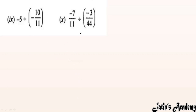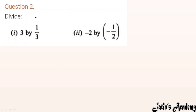Now this last part you will solve by yourself — write whatever answer you get in the comment box. For part (i) of Question 2: 3 ÷ (1/3). Divide converts to multiply, 3/1 × 3 gives 9. So answer is 9.